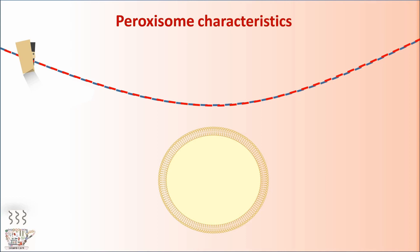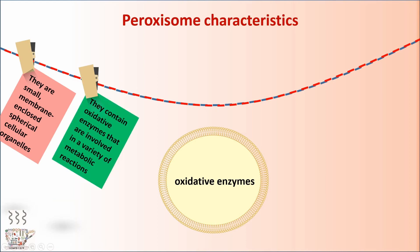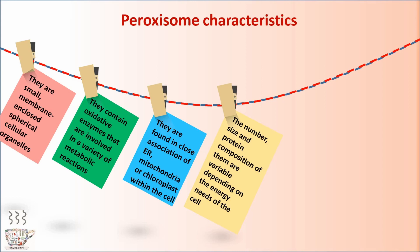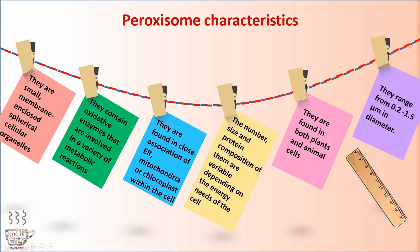Proxysome Characteristics. They are small membrane-enclosed spherical cellular organelles. They contain oxidative enzymes that are involved in a variety of metabolic reactions. They are found in close association with ER, mitochondria, or chloroplasts within the cell. The number, size, and protein composition of them are variable depending on the energy needs of the cell.